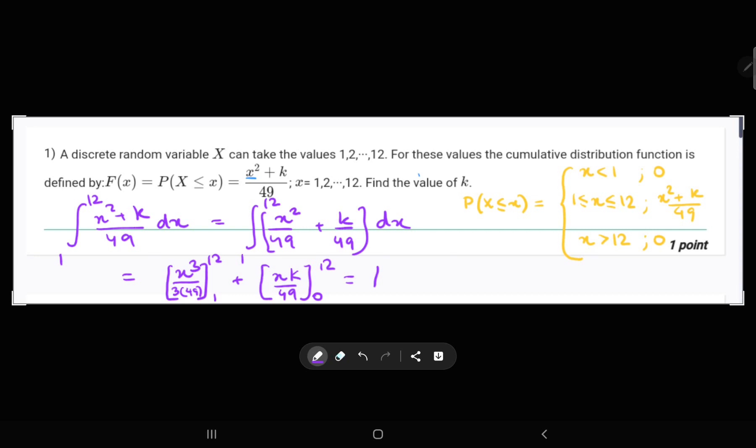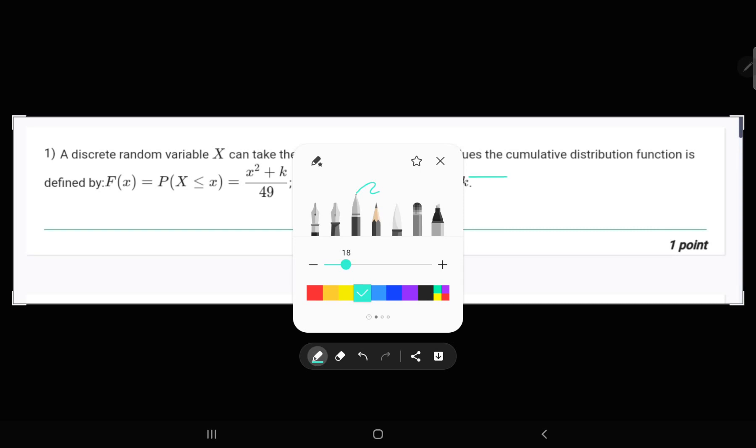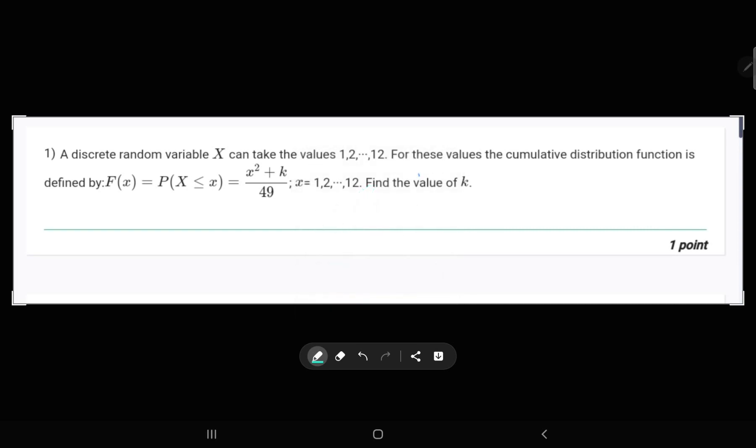So we can solve this equation and get our answer for value k. We were left with x³/(3 × 49) from 1 to 12, plus kx/49 from 1 to 12, equals 1.